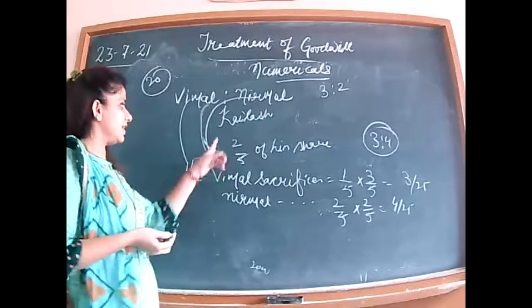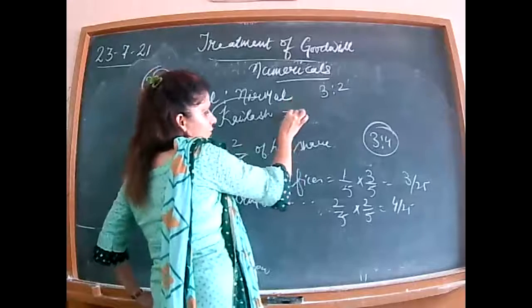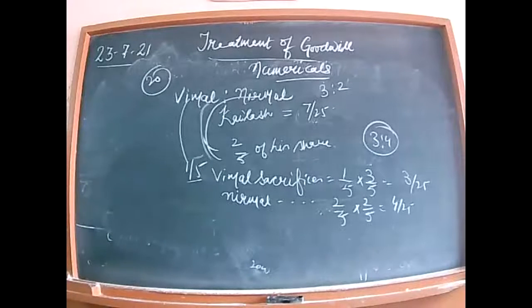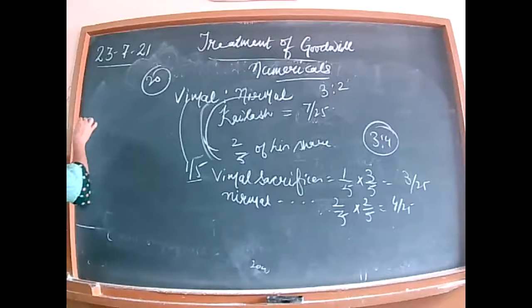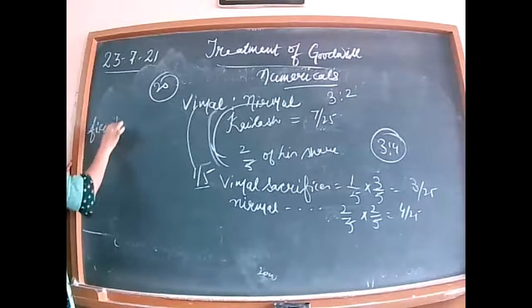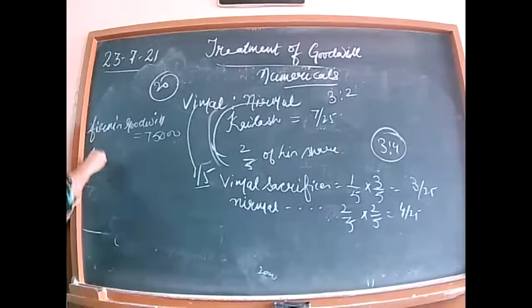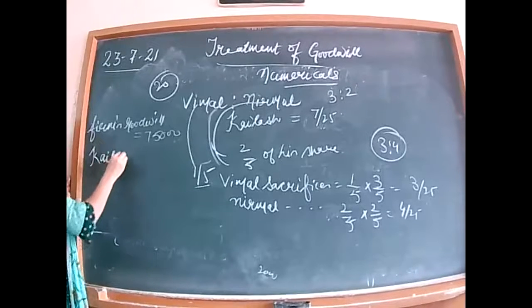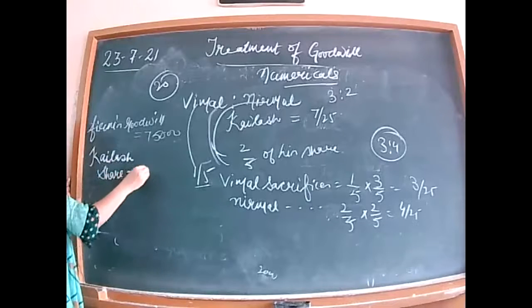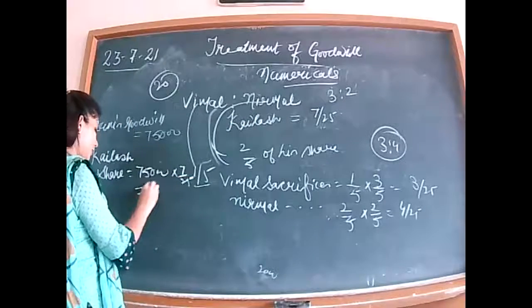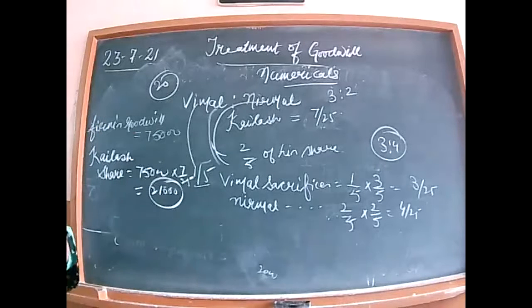Total share of Kailash = 3/25 plus 4/25 = 7/25. Firm's goodwill is 75,000 given in the question. Kailash's share of goodwill = 75,000 into 7/25 = 21,000. Kailash is bringing his share of goodwill in cash, retained in the business.